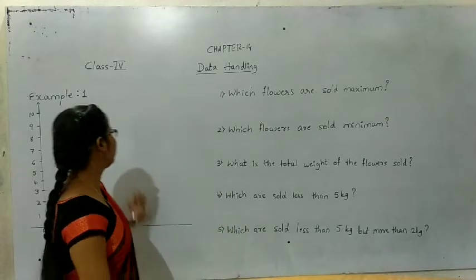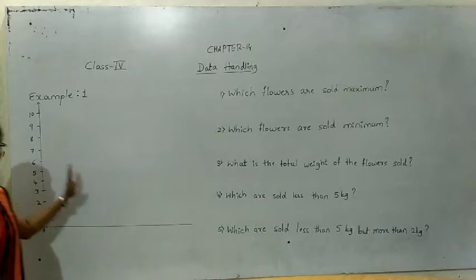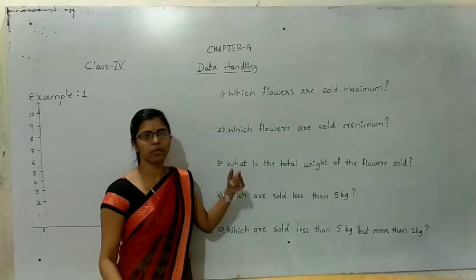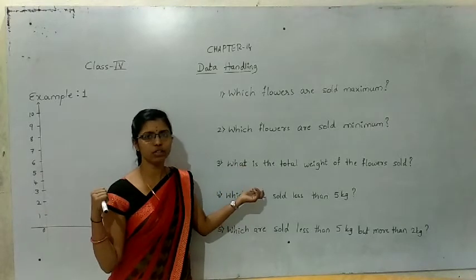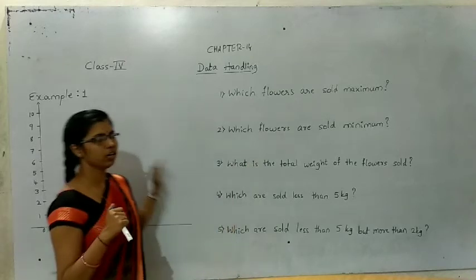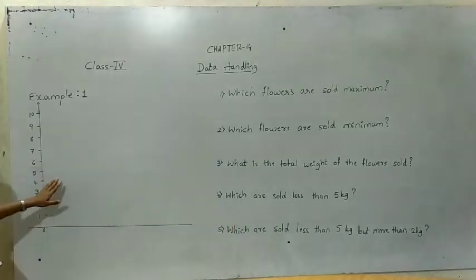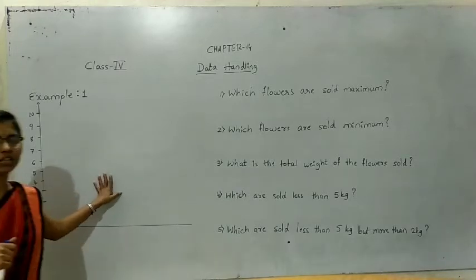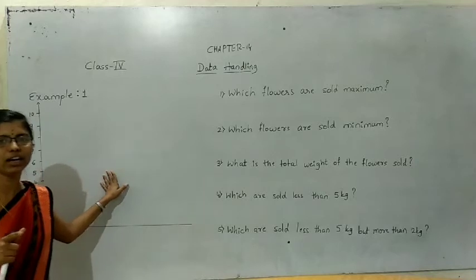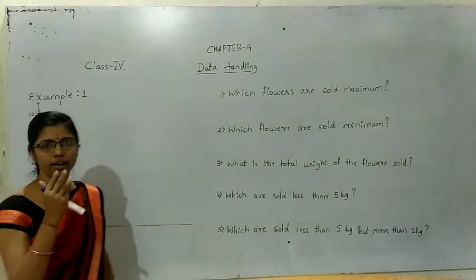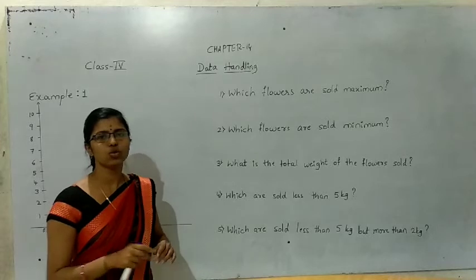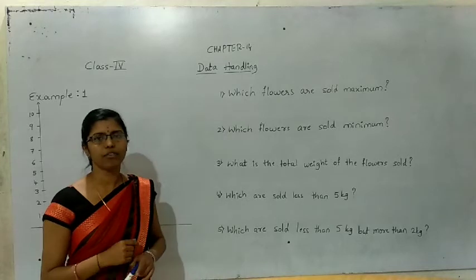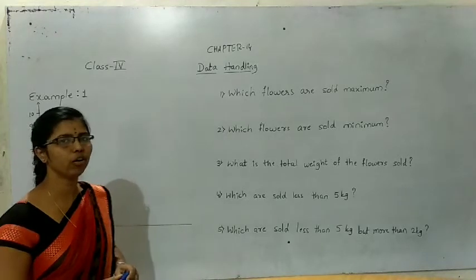Here they have given one more bar graph. By observing this bar graph, we will answer the questions. But first we will discuss about the plan. Here they have given four flowers, and we will now draw the graph.